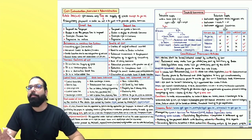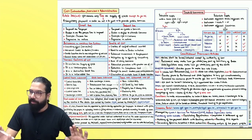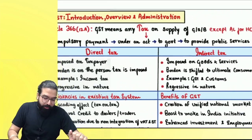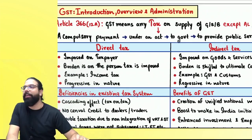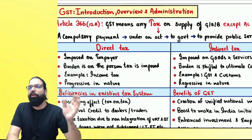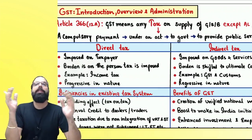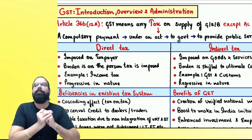This is the very basic chapter — there are no amendments in this chapter. The first thing we learn when studying GST is Article 366 of the Constitution, Clause 12A. What does Article 366 Clause 12A say?